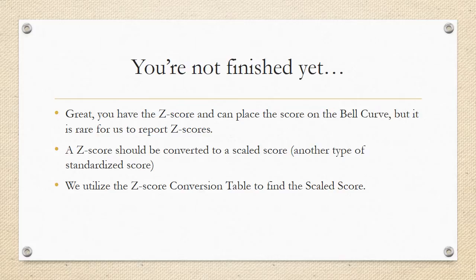And you're not finished yet. So you've got the z-score. We can place it on the bell curve, but it's sort of rare for us to report z-scores. A z-score should be converted to a scaled score, another type of standardized score. We utilize the z-score conversion table to find this scaled score.